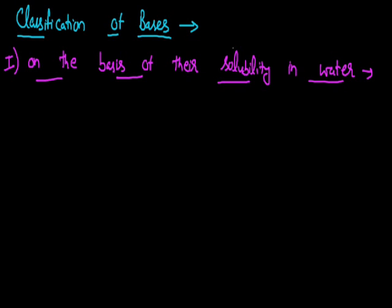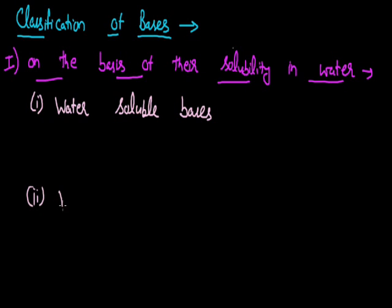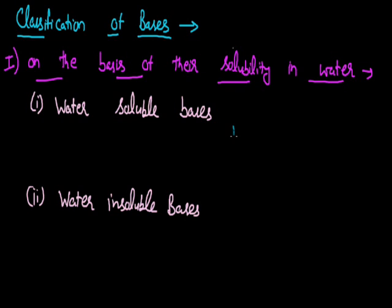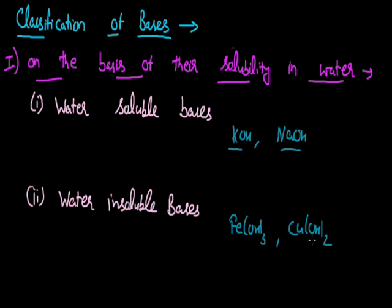On the basis of their solubility in water, bases are divided into two categories: water-soluble bases and water-insoluble bases. For example, potassium hydroxide KOH readily dissolves in water, and sodium hydroxide also dissolves in water — these are termed as water-soluble bases. On the other hand, ferric hydroxide Fe(OH)₃ and cupric hydroxide Cu(OH)₂ are not soluble in water, so these are categorized as water-insoluble bases.